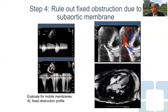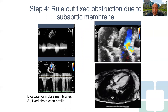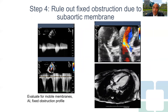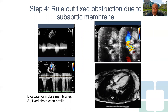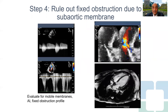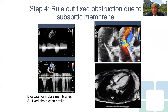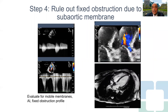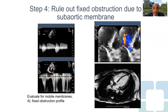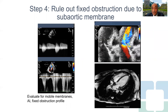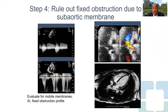Step four: when dealing with LVOT obstruction, recognize that there could be a sub-aortic membrane causing fixed outflow tract obstruction. This is important because in this situation there may not be significant basal septal hypertrophy, and the aortic valve could be affected to a point where it may need replacement.